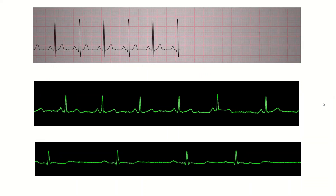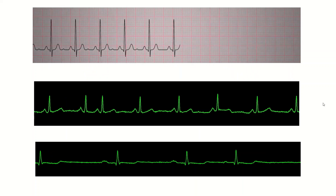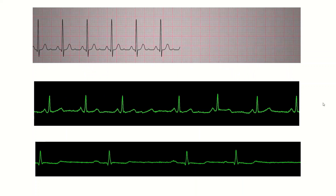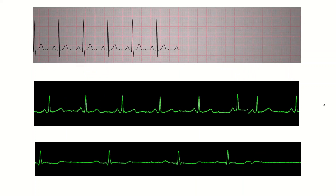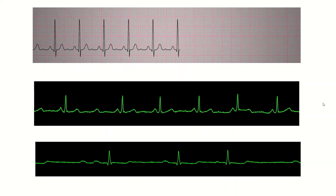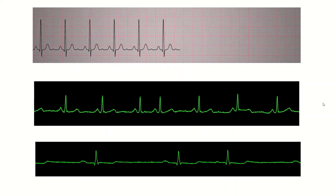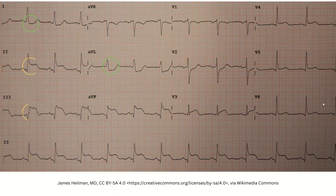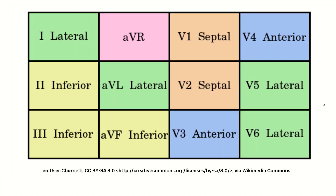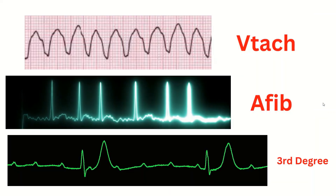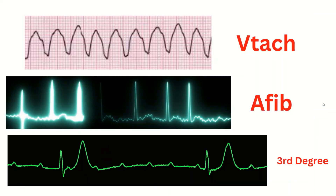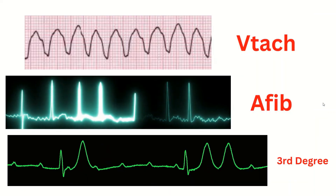The normal heart rate is 60 to 100, but in unstable patients, I'm looking for a heart rate less than 50 or greater than 120. I'll look at the ST segments, looking for depressions or elevations, keeping an eye out for consecutive leads, as well as T wave inversions. Then I'll ask myself if I recognize a specific rhythm like VTAC, AFib, or any of the blocks.